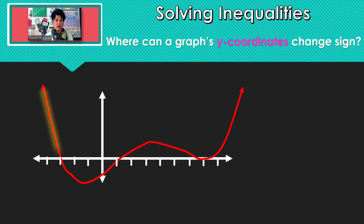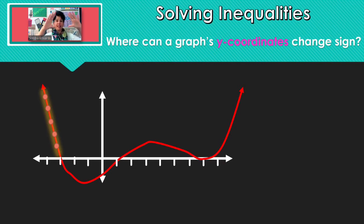As I look along here, all of those points — the y part of the coordinate — a graph is made up of a whole bunch of points, x comma y. And all of those coordinates, the y part is positive.